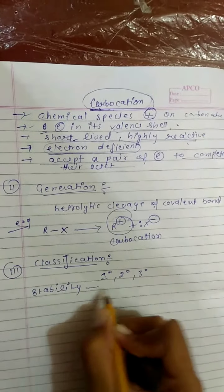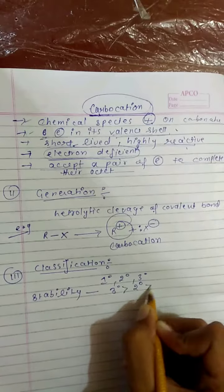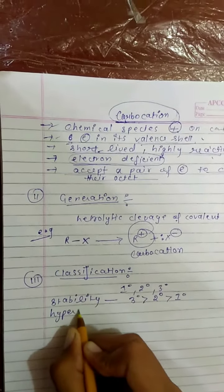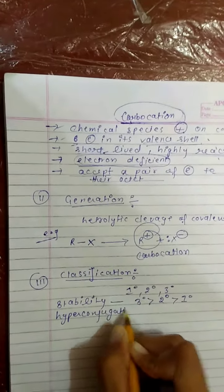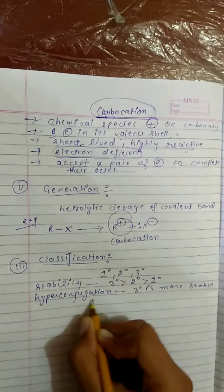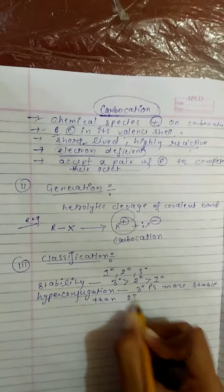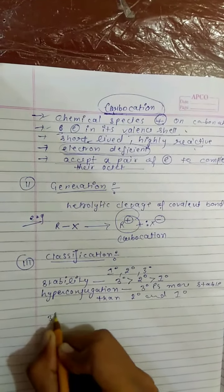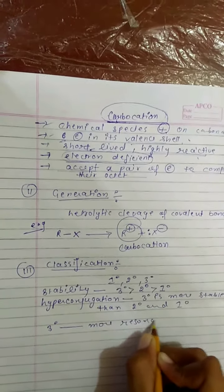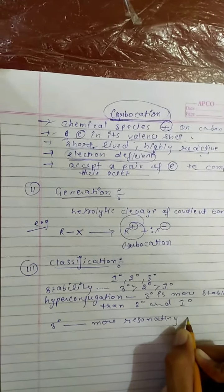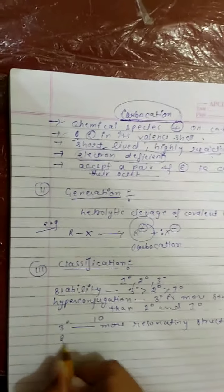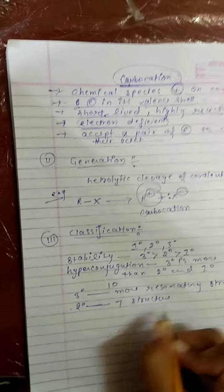Stability of carbocation: tertiary is more stable than secondary and primary. Effect of hyperconjugation on stability - tertiary is more stable because tertiary forms more resonating structures than secondary and primary.